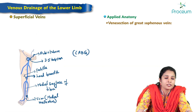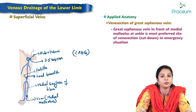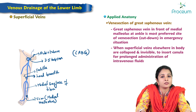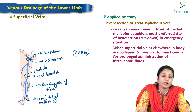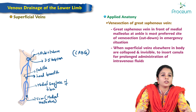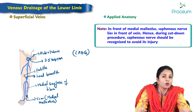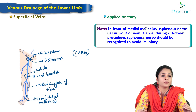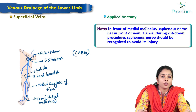Regarding venous cutdown: the great saphenous vein in front of the medial malleolus of the ankle is the most preferred site for venous cutdown in emergency situations when superficial veins elsewhere in the body are collapsed and invisible, making it necessary to insert a cannula for prolonged administration of intravenous fluid. Importantly, the saphenous nerve lies just in front of the vein at this site, and during venous cutdown the saphenous nerve must be recognized and its injury avoided.